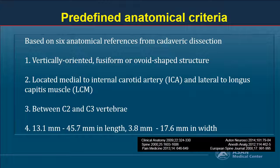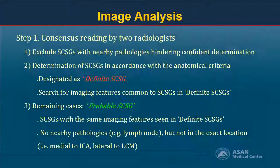We localized the superior cervical sympathetic ganglion using anatomical criteria based on previous cadaveric studies. It was a vertically-oriented fusiform or ovoid-shaped structure located medial to the internal carotid artery and lateral to the longus capitis muscle at the level of C2 or C3 vertebra, with mean size of approximately 15 mm long and 8.1 mm wide. The best standard reference would be histological correlation; however, performing a biopsy might result in complications like Horner syndrome, so we tried to overcome this with the following study design.